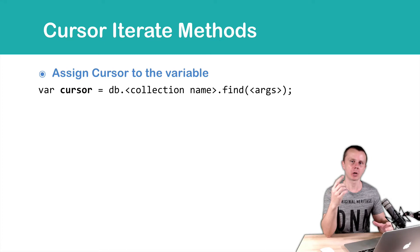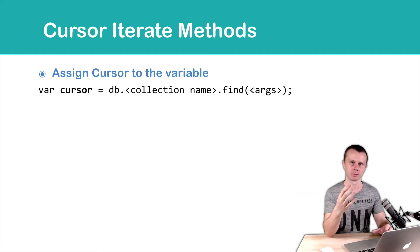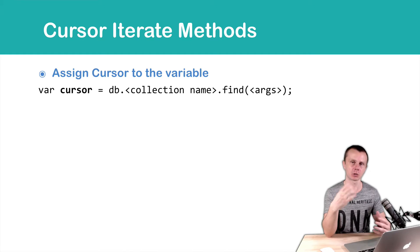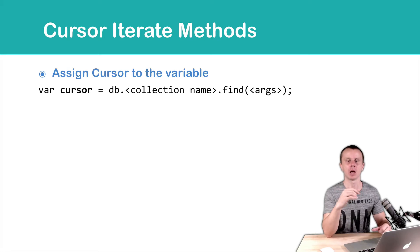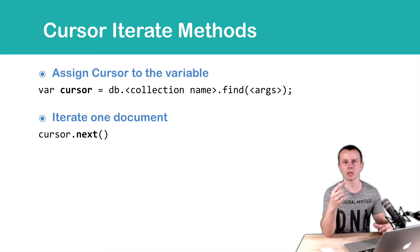Before performing any operations with a cursor, you must assign the cursor to the variable. So recap: when you invoke the find method, the server will return you a cursor. Before, you have not assigned this cursor to any variable. In order to perform any actions with this cursor, you must create a variable — in this example, a variable called cursor — and assign the result of the find method to this variable. After that you can use, for example, the next helper method, that will iterate just one document.